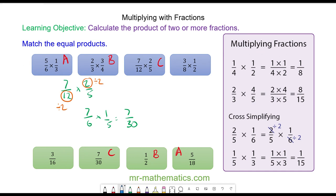Finally, three over eight multiplied by one half does not simplify, so we have three over sixteen. Okay, thank you very much for watching — I hope you found that useful. Thanks again and take care.